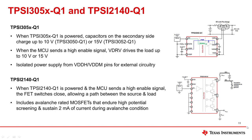When the TPSA3050-Q1 is powered, power is transferred across the isolation barrier and charges up the secondary capacitors. When the MCU sends a high-enabled signal from the primary side to the secondary side, VDRV drives the load up to 10 volts. Since the power from the primary side at pin VDDP is connected and used to power VDDH and VDDM to charge the capacitors, no additional isolated power supply is needed on the secondary side. Therefore, the TPSA3050-Q1 can also be used as an isolated power supply for other external circuitry by connection to either of the pins on the secondary side. The TPSA3052-Q1 operates similarly except the gate drive voltage is 15 volts versus 10 volts, which is useful for higher power applications.